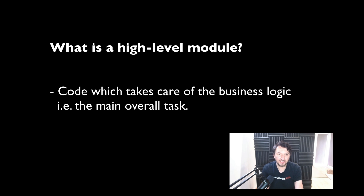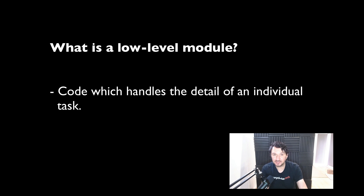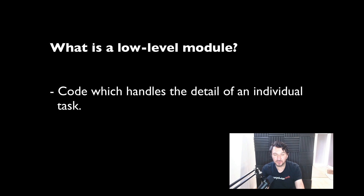High-level modules — think of these as your classes which take care of the business logic, the core functionality. In our case, the example we're going to use is an order processor for processing an order, like an e-commerce order. That is the high-level module. But in order to complete that task, other things need to happen: we might need to email a customer, log something, or write data to a database. Those components that handle those tasks are the low-level modules — the ones that take care of the smaller bit tasks which are part of the overall high-level task.